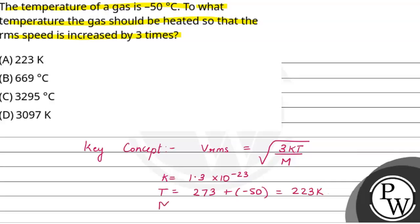और m mass of gas molecules है. इस VRMS को अगर हम ध्यान से देखें, तो 3, k और m, यह तीनों constant रहेंगे.